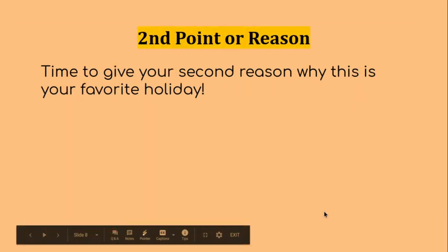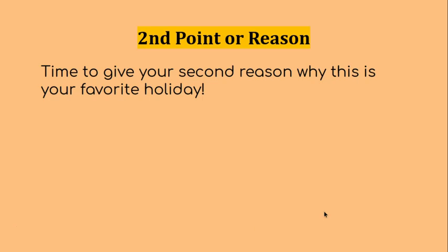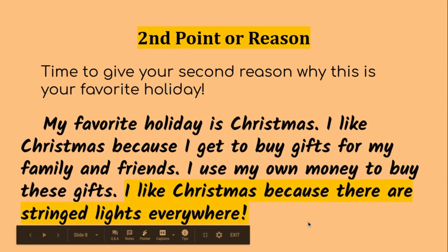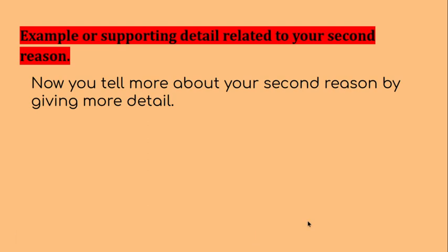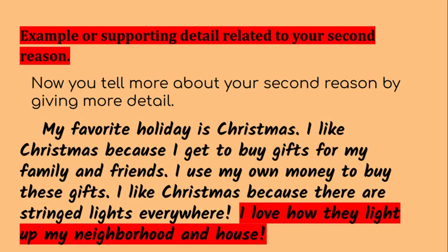Your fourth sentence is going to be your second point or your second reason why this is your favorite holiday. My second reason: I like Christmas because there are stringed lights everywhere. Now we're going to give another supporting detail going back to that idea of the string lights, so I need to give an example about that. I put: I love how they light up my neighborhood and house.